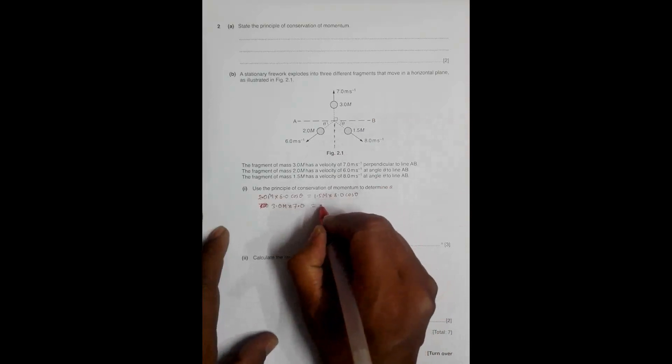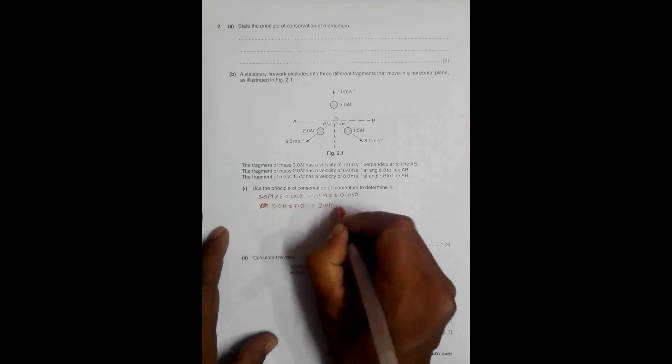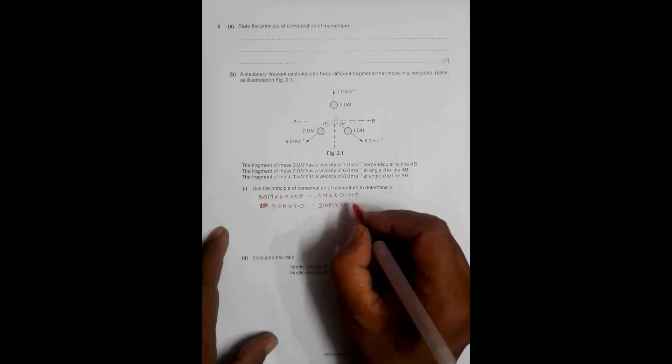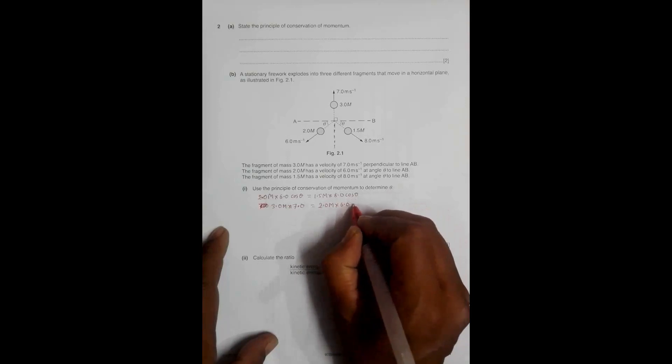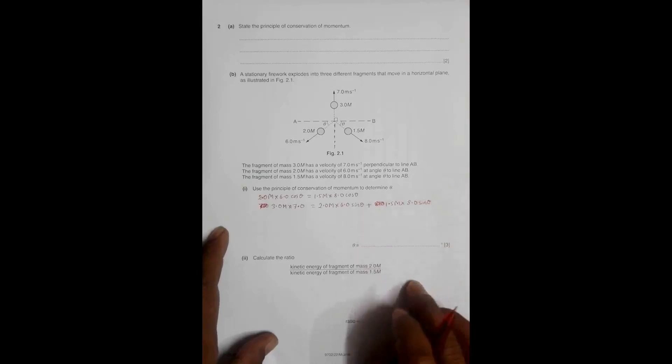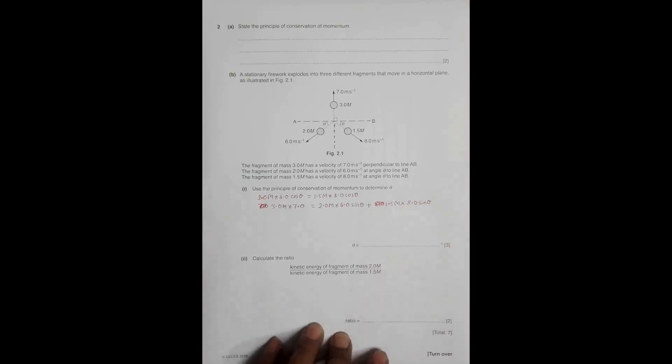So it should be 2.0m into 6.0 sin theta plus 1.5m into 8.0 sin theta. These are the two equations. By solving these two equations, we can obtain the value of theta.